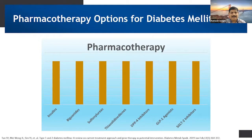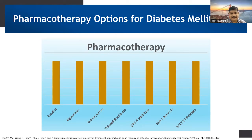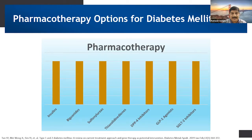Coming to pharmacotherapy, there are various pharmacotherapeutic agents used as anti-diabetic medications. They include insulins, biguanides, sulfonylureas, and GLP-1 agonists. Insulins are the ultimate management in Type 1 diabetes mellitus. Different types of insulins are available: short-acting, intermediate-acting, and long-acting insulin. Based on the clinical condition and need of the patient, a combination of insulins can be administered.